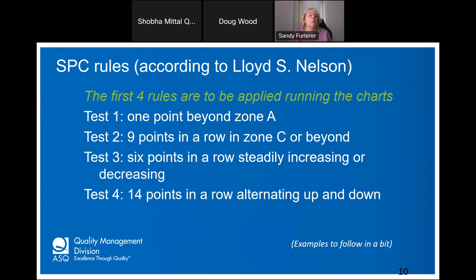On the question of normal distributions: most people think you need one, but you don't always. The Central Limit Theorem helps here — even if data doesn't start normally distributed, collecting enough data (around 25–30 subgroups in X-bar charts) brings the distribution close enough to normal. That's why we say it doesn't always have to be normal to start. You can certainly test for normality, but the CLT relieves the requirement. Some control charts, especially attribute charts, use other distributions like binomial and Poisson.